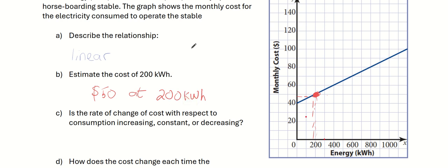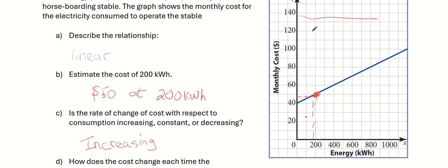Is the rate of change of cost with respect to consumption increasing, constant, or decreasing? As you can see, the line is going upwards from left to right. Whenever you're reading graphs, you always read a graph from left to right, and from left to right it's actually going up. So you would say that this is increasing. Just so you know, constant looks like a straight horizontal line, and decreasing looks like a line that's going downwards.